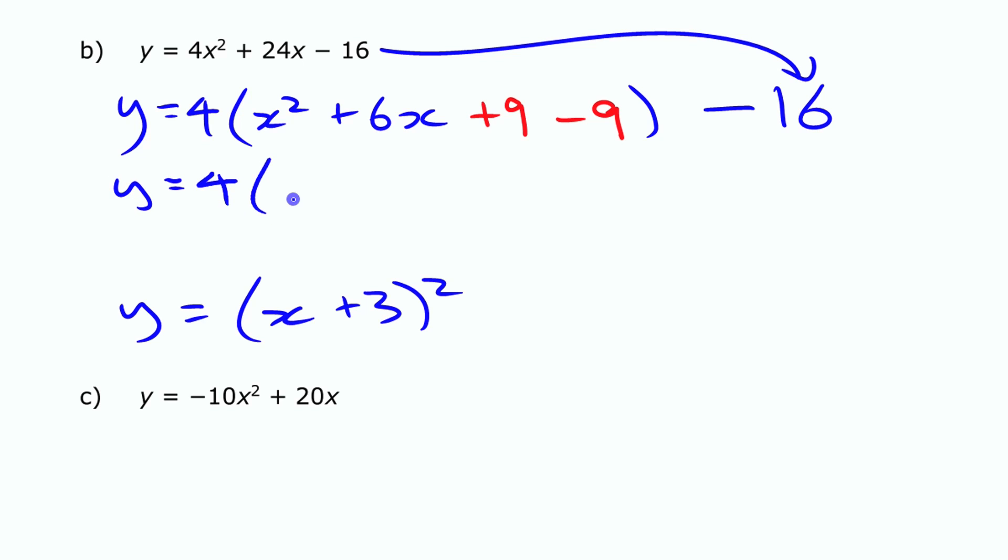So along the way then, I'm going to keep this 4 out in front. I'm going to group these three terms because those are going to be my perfect square trinomial. Plus 9 I'm going to put outside of the brackets. Now the thing to realize though is now that there's a 4 in front, putting this minus 9 or plus 9 inside of the brackets is not the same as putting a minus 9 outside of the brackets.